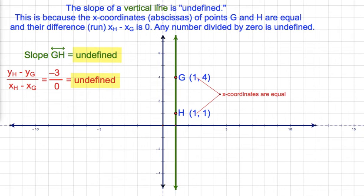The slope of a vertical line is undefined. This is because the x-coordinates of points G and H are equal and their difference, run, is equal to 0. Any number divided by 0 is undefined.